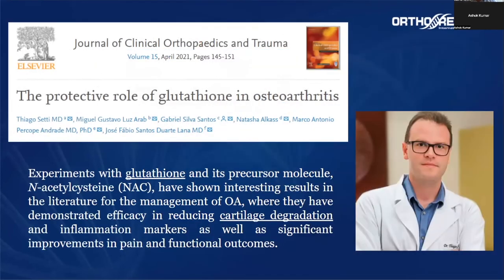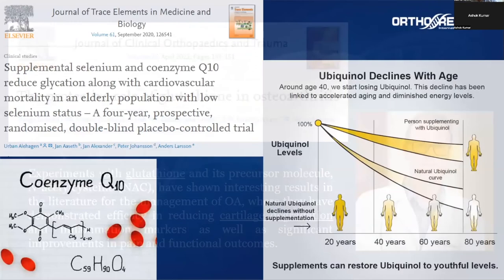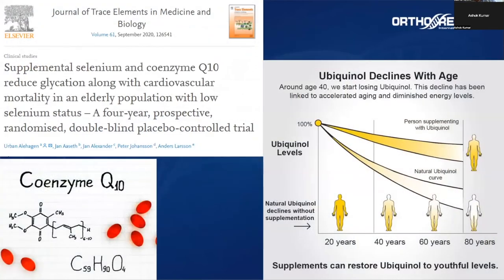This is one of the reviews we published in our group about the role of glutathione in osteoarthritis, and we can see that glutathione can be used to reduce cartilage degradation in osteoarthritic joints. Another important supplement we can use to decrease inflammation is CoQ10.